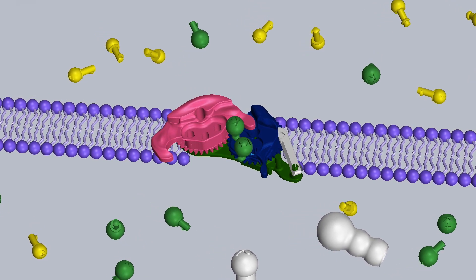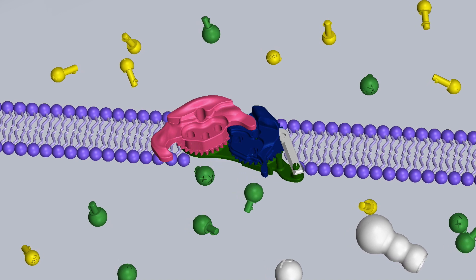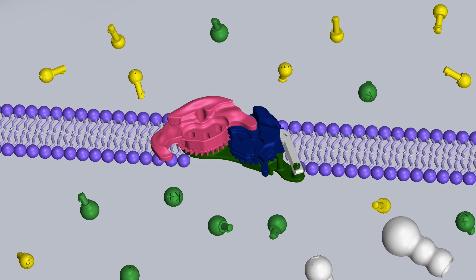As this process is repeated, an electrochemical gradient is created which is utilized for a host of cellular functions.